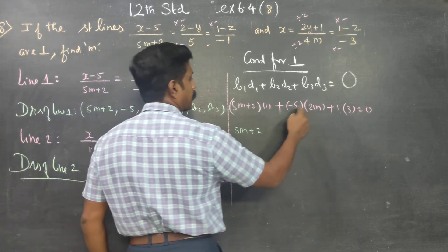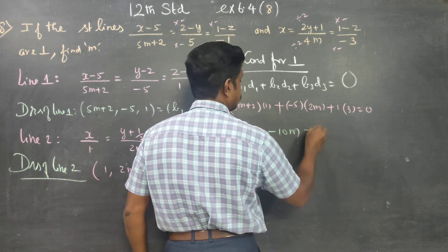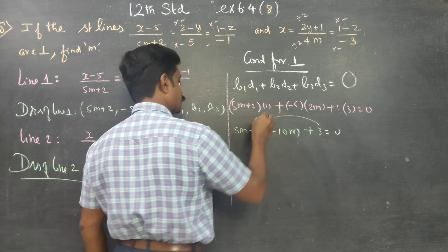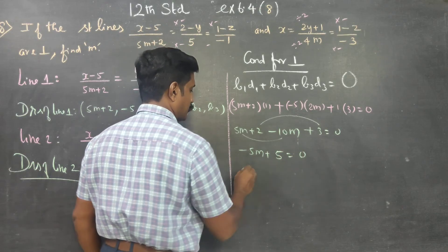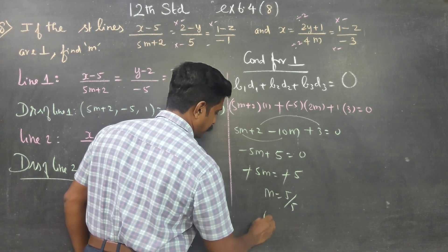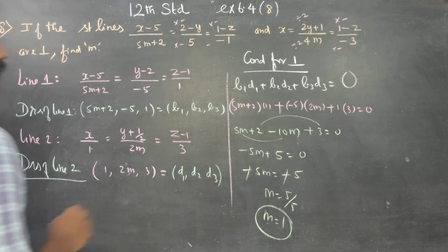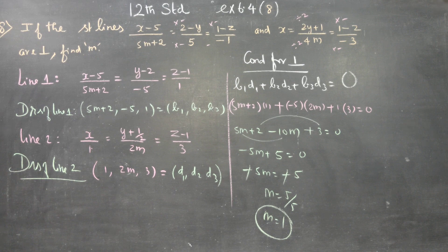So: (5m plus 2) times 1, plus (minus 5) times 2m, plus 1 times 3 equals 0. That gives 5m plus 2 minus 10m plus 3 equals 0. Then 5m minus 10m is minus 5m, so minus 5m plus 5 equals 0, giving minus 5m equals minus 5, so m equals 1. This is your final answer. The condition for perpendicular lines is b1·d1 plus b2·d2 plus b3·d3 equals 0, where b1, b2, b3 are direction ratios of line 1 and d1, d2, d3 are direction ratios of line 2.